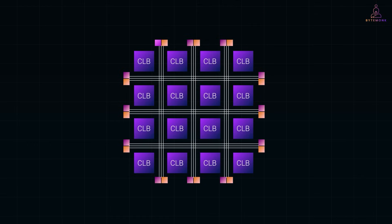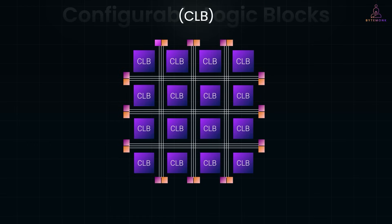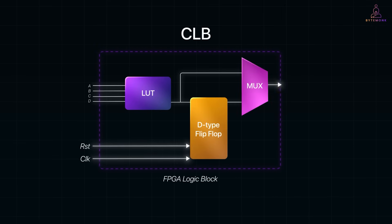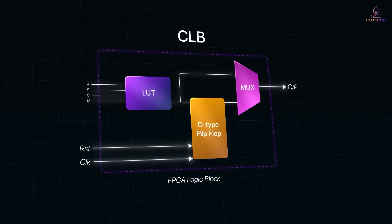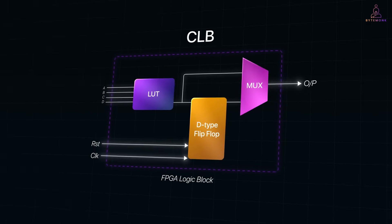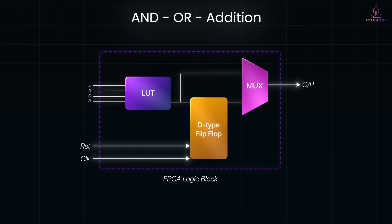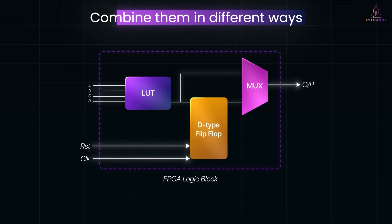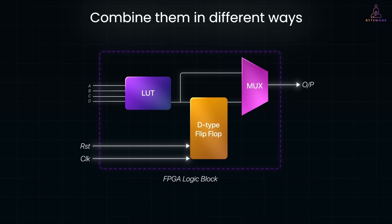Inside the FPGA are small reusable units called configurable logic blocks or CLBs. You can think of CLBs like reusable Lego bricks — each one can perform simple logic tasks like AND, OR and addition. What makes them powerful is that you can combine them in different ways to build complex hardware units.